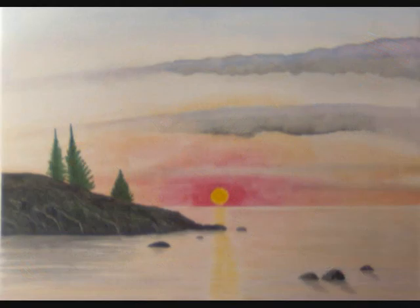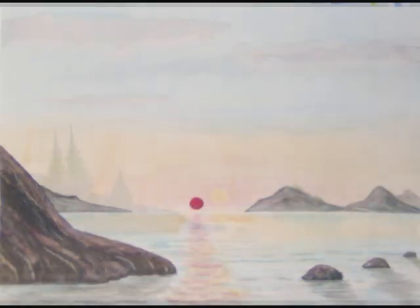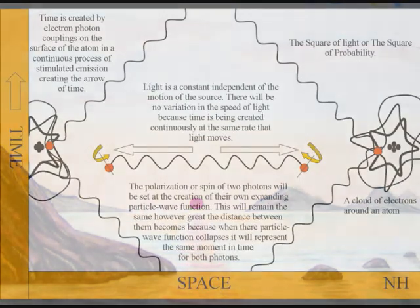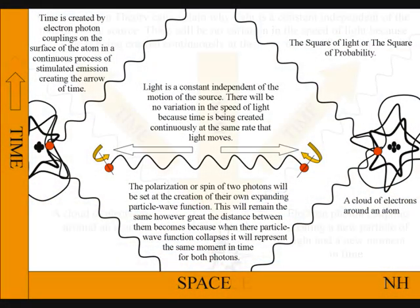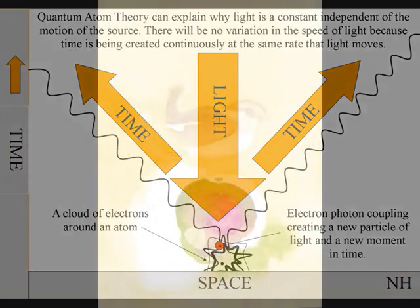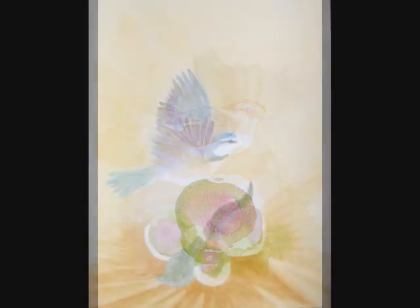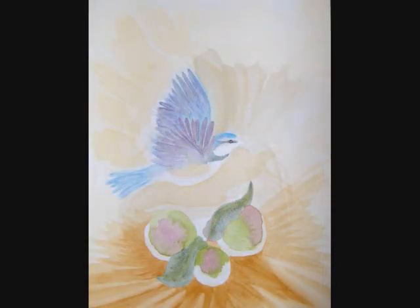Because each atom is creating its own space-time at the same rate that light moves, the expansion of light between the atoms will always be a universal constant, independent of the motion of the source. This can also explain why light is so beautiful when it strikes an object. It is because we are looking at a moment of pure creation of time and space.